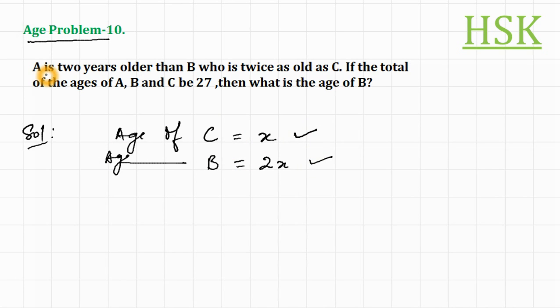And because it is given that A is 2 years older than B, this means that the age of A is equal to 2X plus 2.